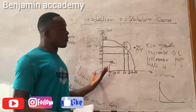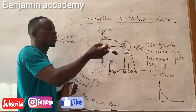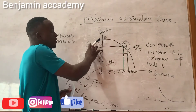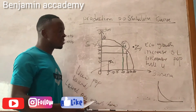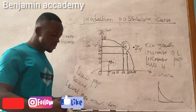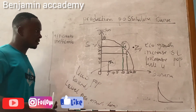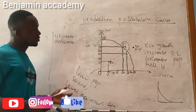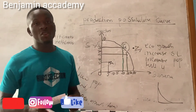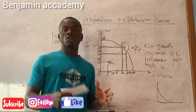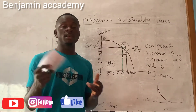Opportunity cost — you already know what it is. The next best forgone alternative. If a country wants to move from B to G, they have to forgo 5 units of tractors to produce bananas. The production possibility curve also explains the principles of scarcity, choice, and opportunity cost.